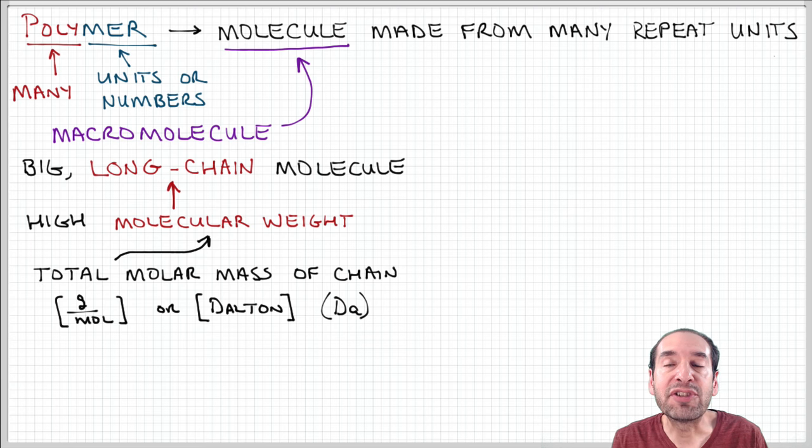So basically, if a chain is composed of carbon and hydrogen atoms like polyethylene, then we just add up all the carbons and all the hydrogens that make up the chain and calculate the total molar mass. And that gives us the molecular weight of the polymer.